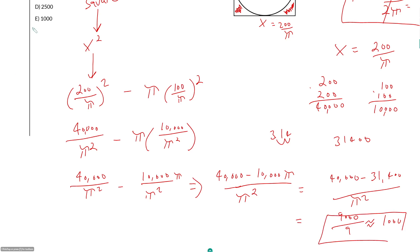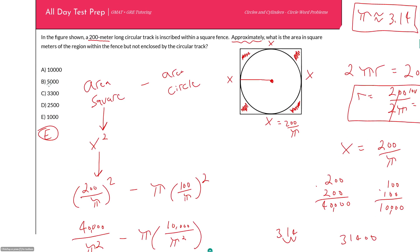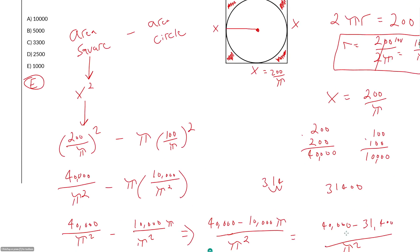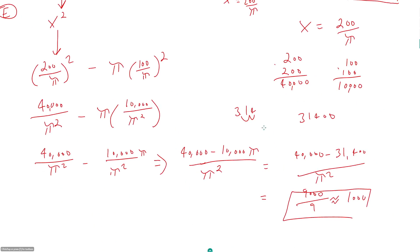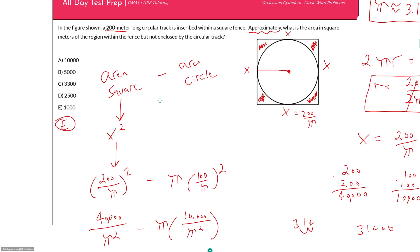The reason we can do that is because our answer choices are pretty spread apart. If they were closer, I probably would have to do some multiplying with this decimal here of 3.14.